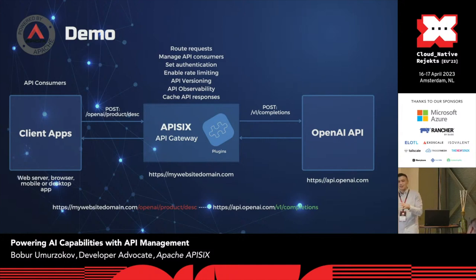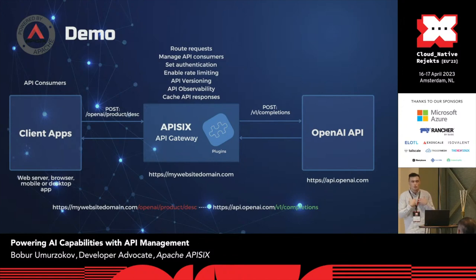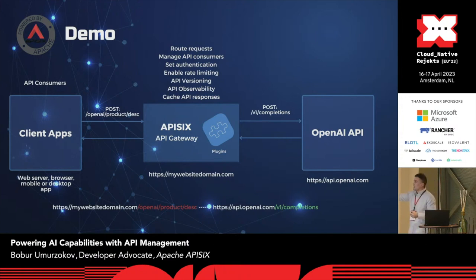Now let's switch to the practical part. I drew a diagram of how my demo looks. Imagine I have a client mobile application where my clients can type 'please provide a product description' or 'give me information about this food,' and AI responds and generates a response — but in the middle there's an API gateway. We use it for routing requests because we might have not just one single API endpoint, but multiple.